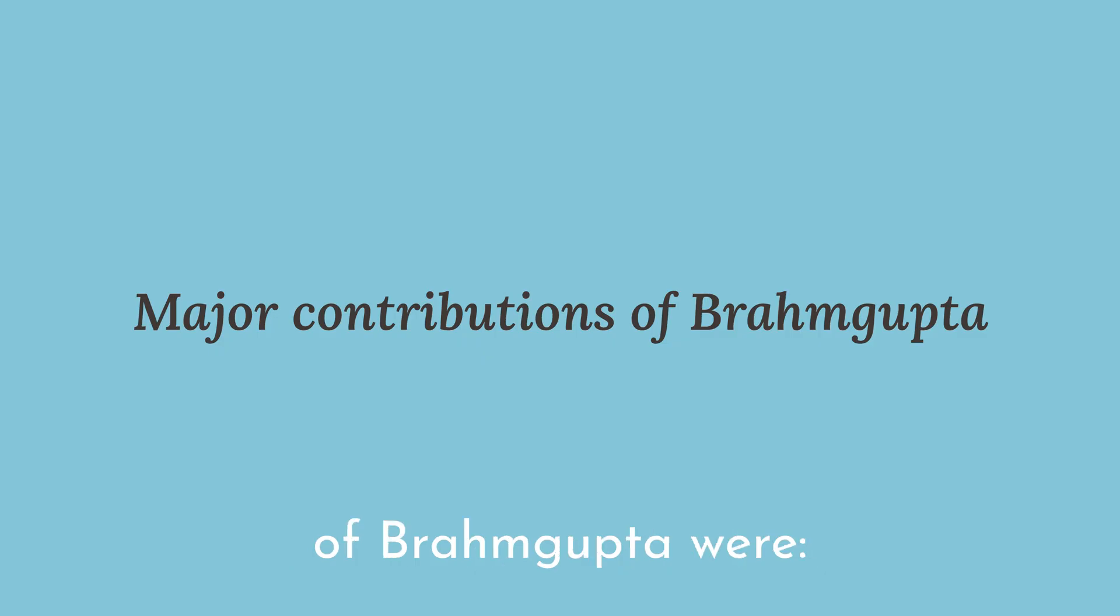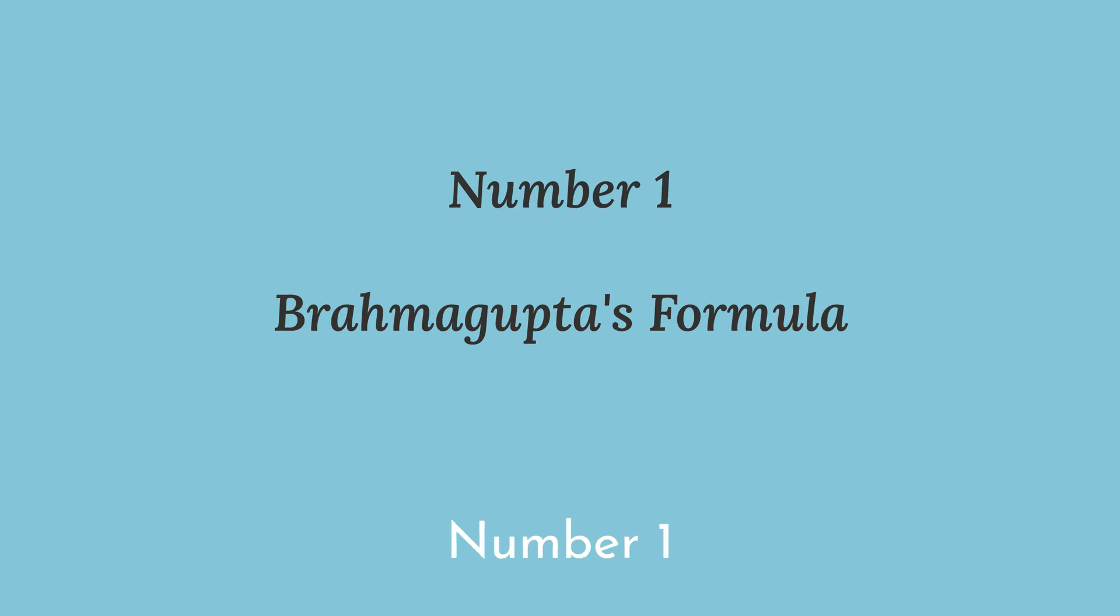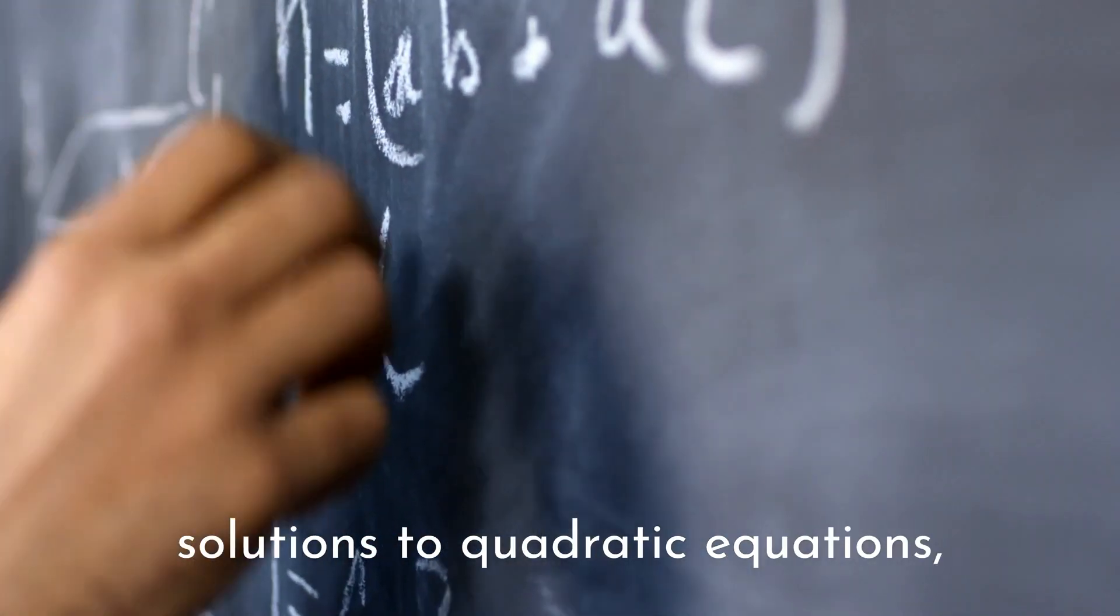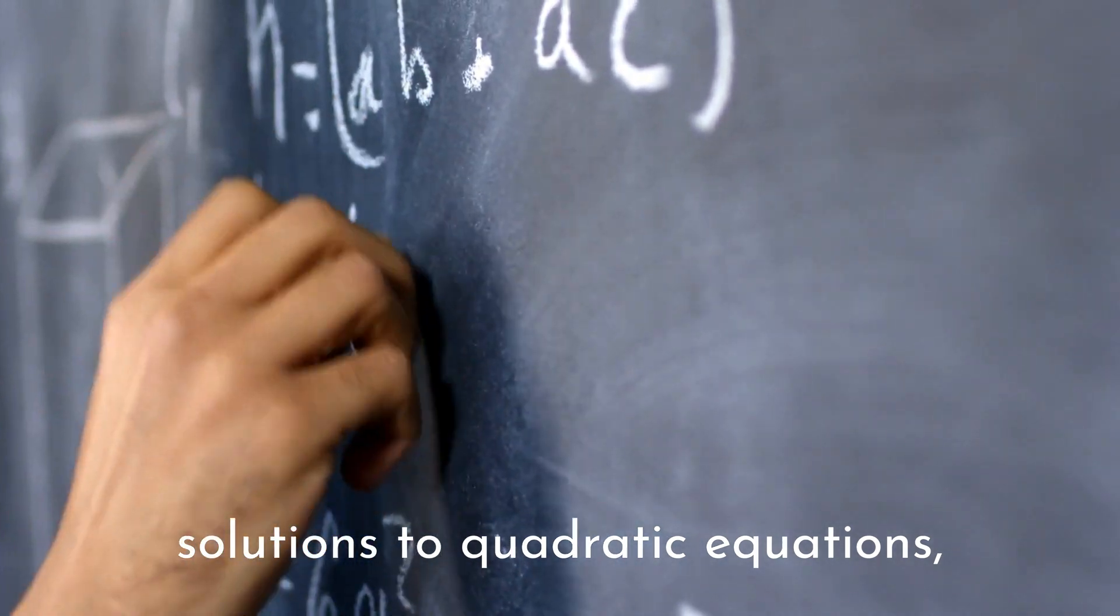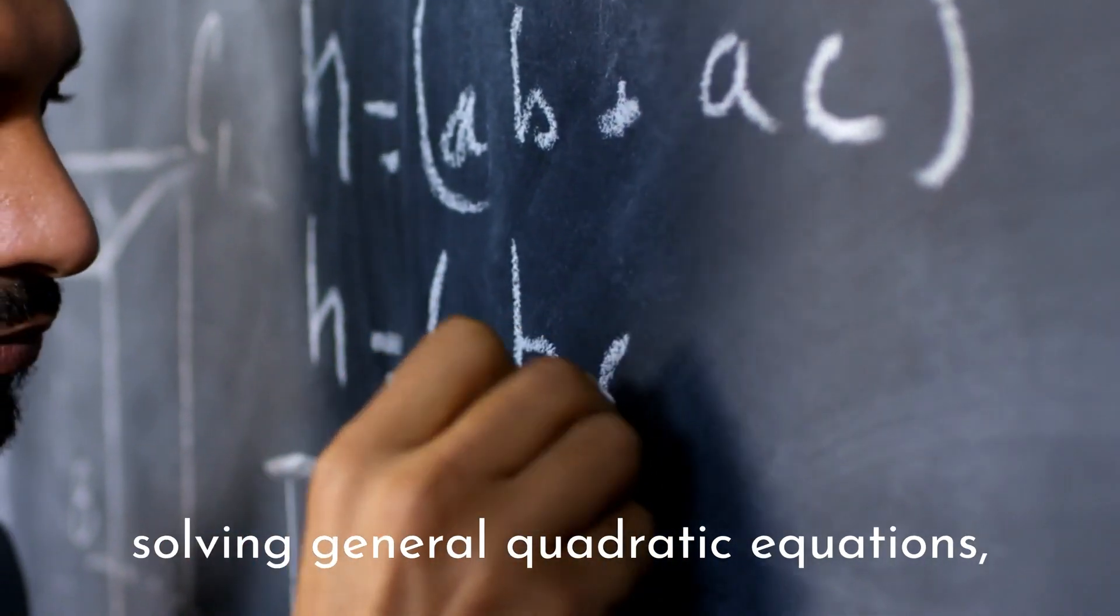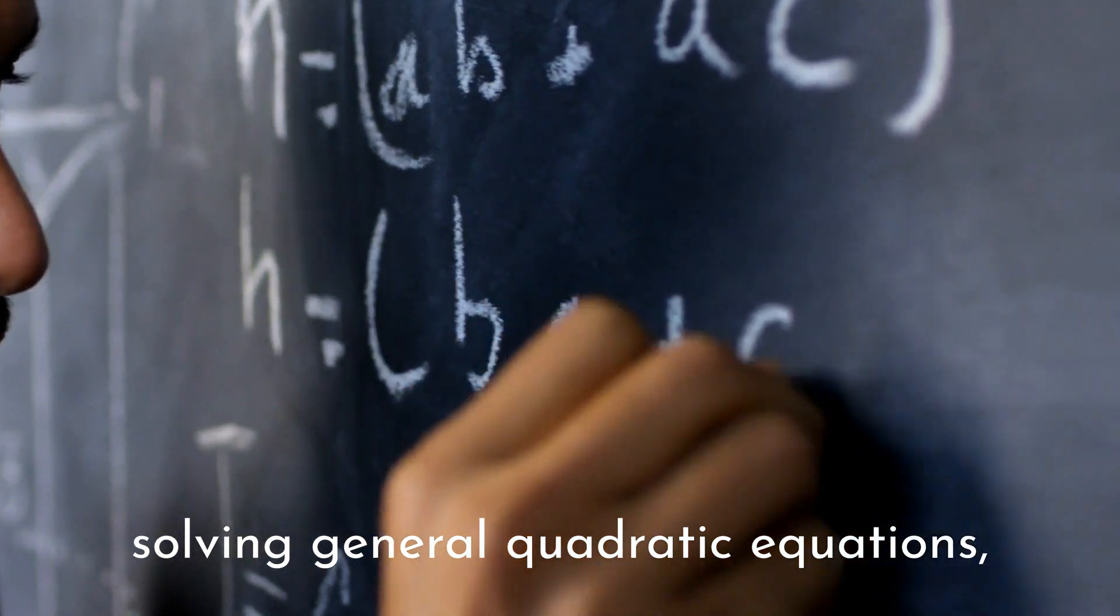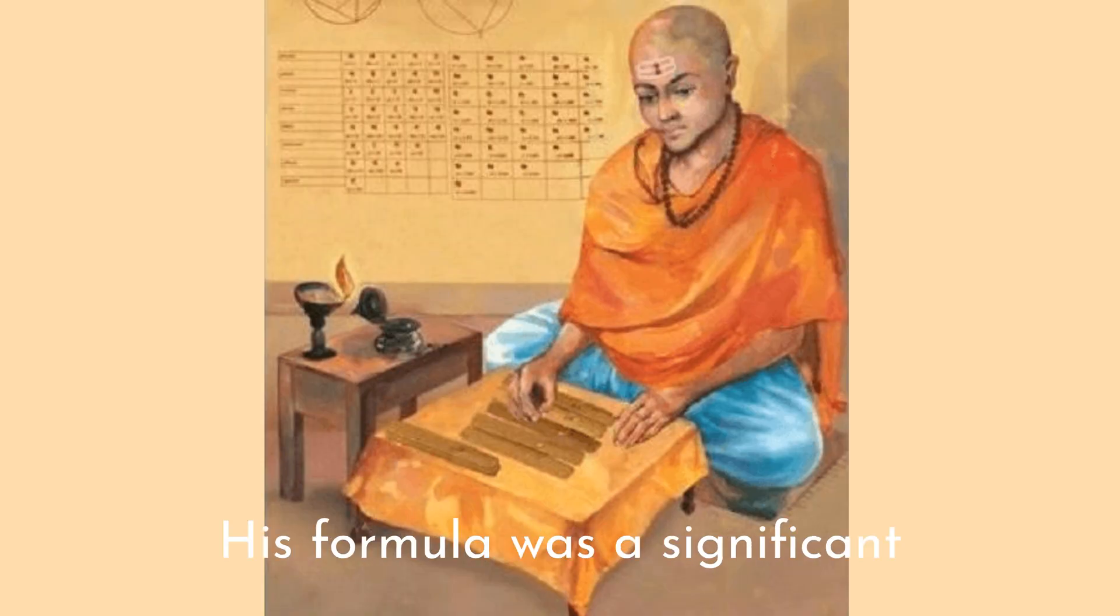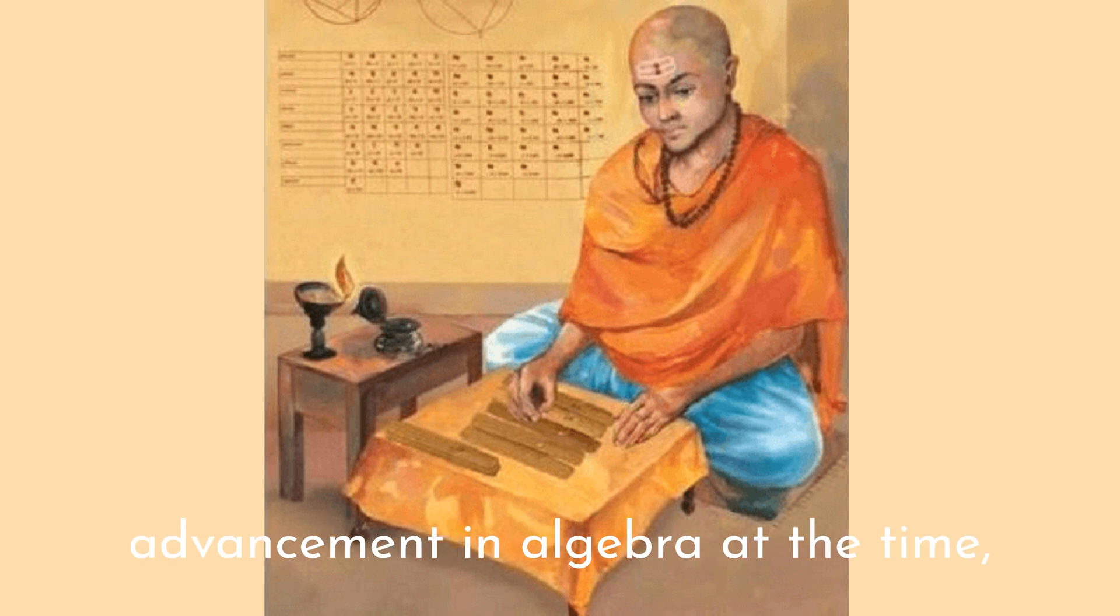Four major contributions of Brahmagupta were: Number 1. He is known for his work on solutions to quadratic equations, and he developed a formula for solving general quadratic equations, including both positive and negative solutions. His formula was a significant advancement in algebra at the time, providing a systematic approach to solving equations that was previously elusive.